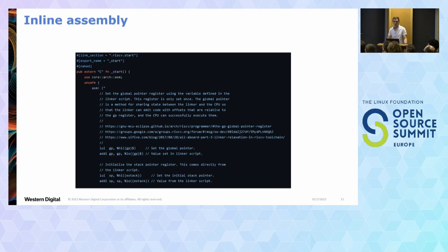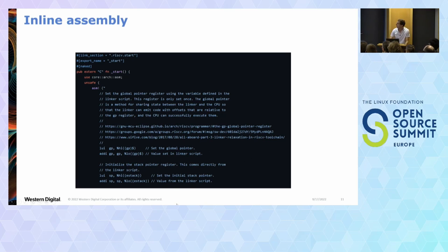For embedded we need inline assembly — we can't write the entire thing in Rust. Rust handles that. Here's an example of startup code for RISC-V. We can link it via the linker, specify where we want it, and call the function as a naked function so LLVM doesn't generate any prologue or epilogue. Then we write the assembly the same way GCC does it with LLVM. It's inside the unsafe keyword because the compiler is saying it doesn't know what's in there. There are a few hundred lines of assembly in the entire project, all heavily commented and scrutinizable.